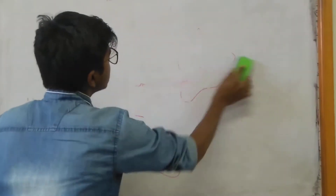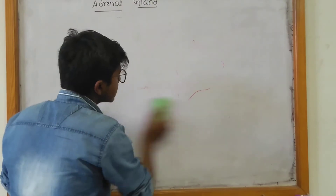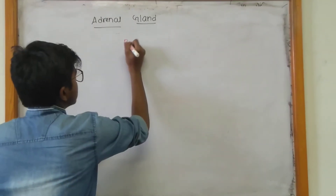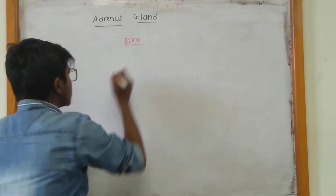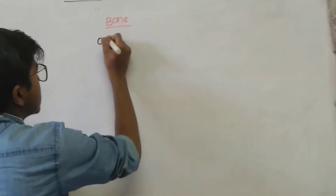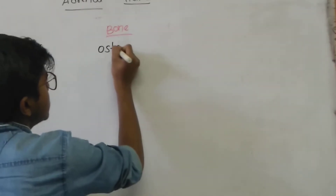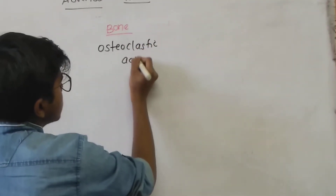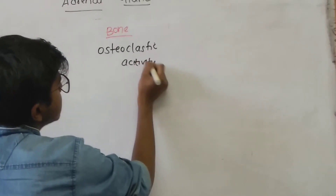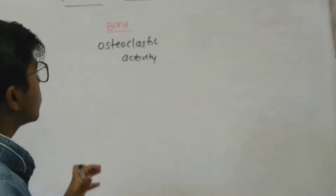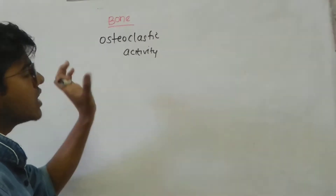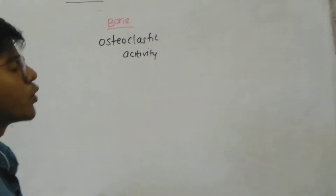Glucocorticoids also have actions on bone. They mainly increase osteoclastic activity. If there is hypersecretion of glucocorticoids in the body, it may lead to rickets in children or irregular bone fractures.